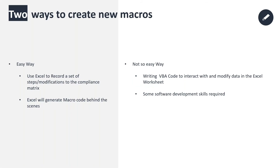There are two ways to create macros for use in VisibleThread: the easy way and the not-so-easy way. The easy way is to use Microsoft Excel to record your set of steps for customizing and modifying your compliance matrix. We'll spend a lot of time on examples of creating macros the easy way, and touch on the not-so-easy way later.